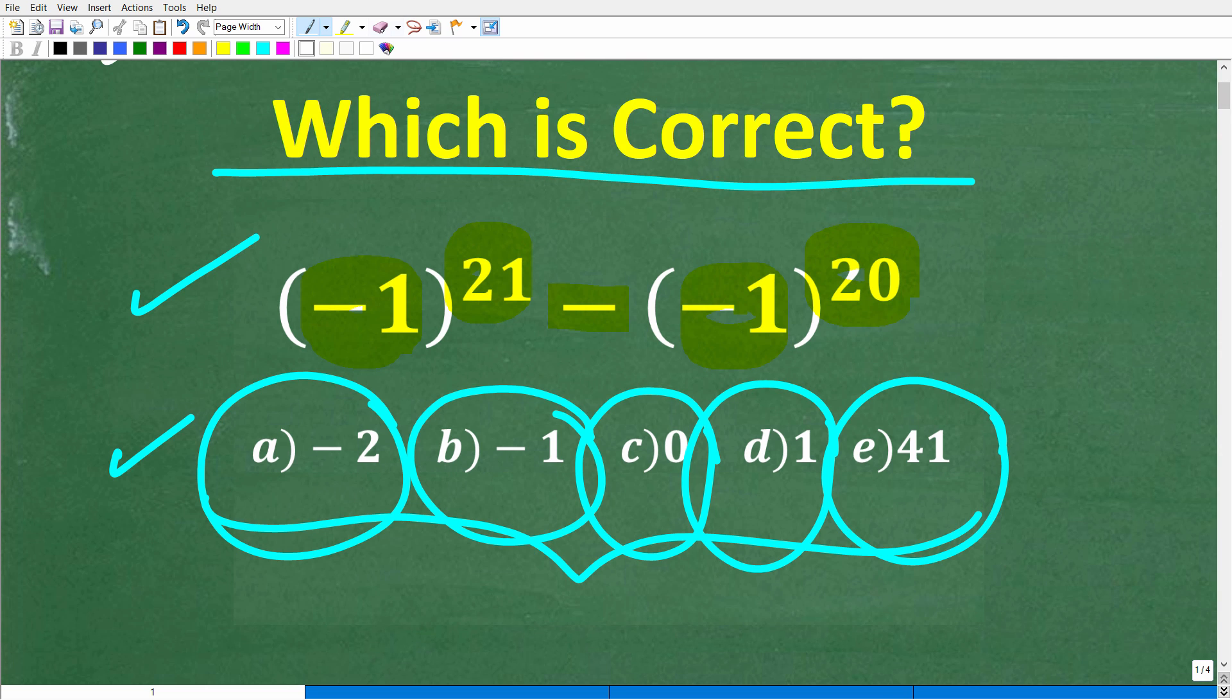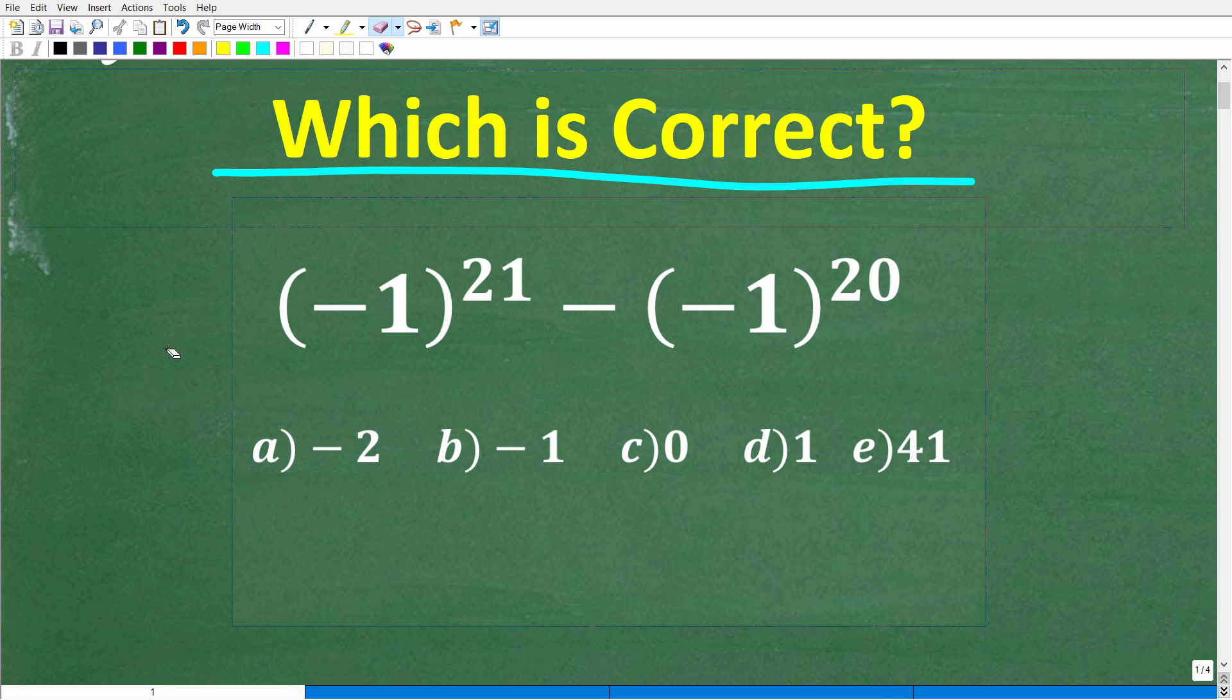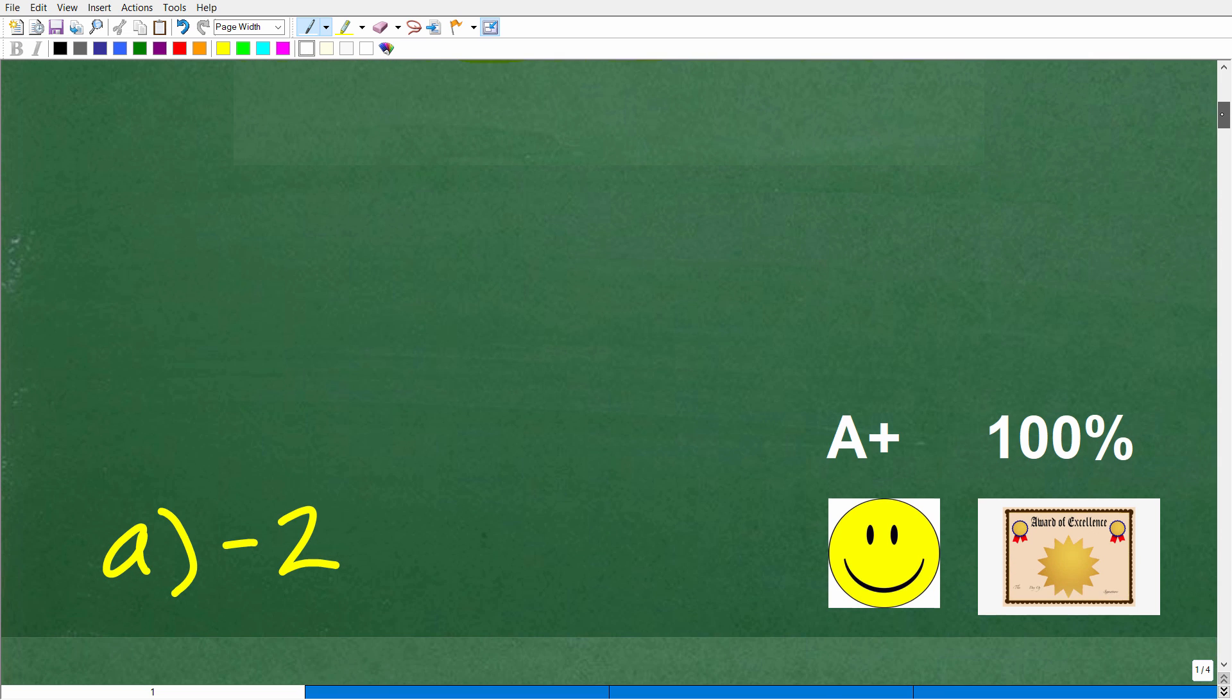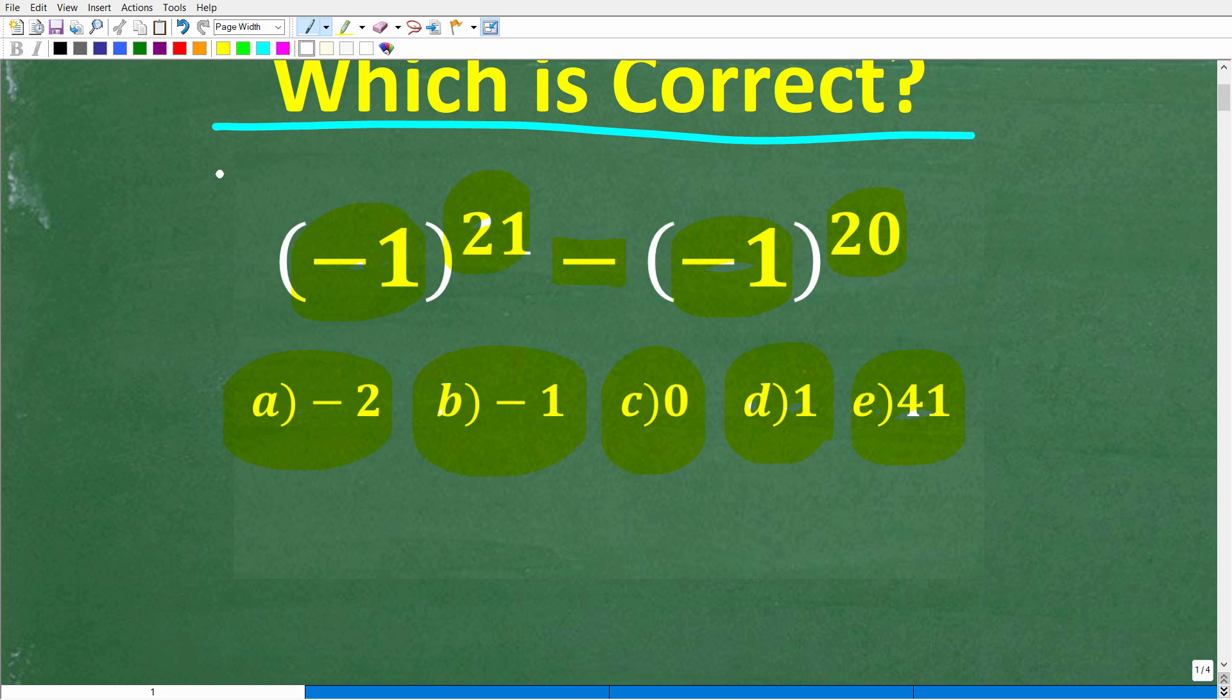All right, so here is the question. And we'll go through these options or answer choices. So negative one to the 21st minus negative one to the 20th. A is negative two, B is negative one, C is zero, D is one, and E is 41. All right, so let's take a look at the right answer. The correct answer is A, negative two. Now, if you got this right, well, you definitely get a happy face and A plus and 100% and a certificate of excellence for being a certified professional expert in the area of working with powers and exponents without the aid of a calculator.